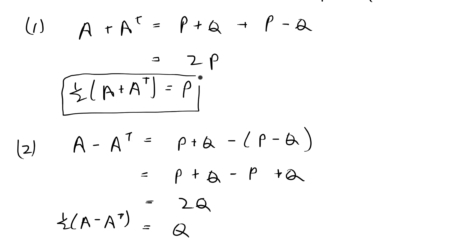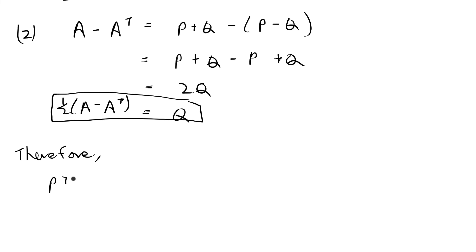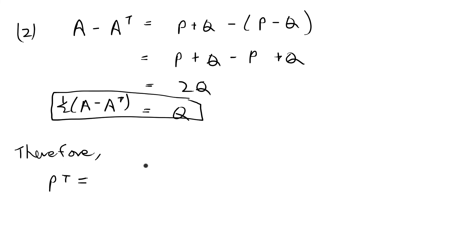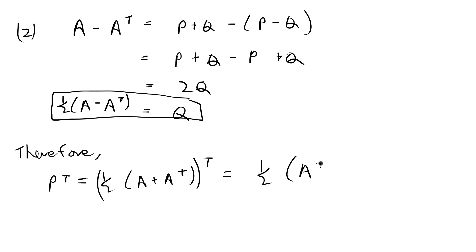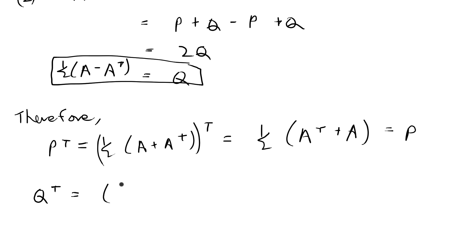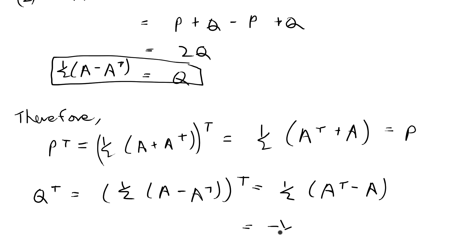Now let's verify these formulas satisfy our required properties. P transpose equals the transpose of one-half (A plus Aᵀ), which equals one-half (Aᵀ plus A) — exactly equal to P. And Q transpose equals the transpose of one-half (A minus Aᵀ), which equals one-half (Aᵀ minus A), which equals negative one-half (A minus Aᵀ), which equals negative Q. And we are done with this problem.